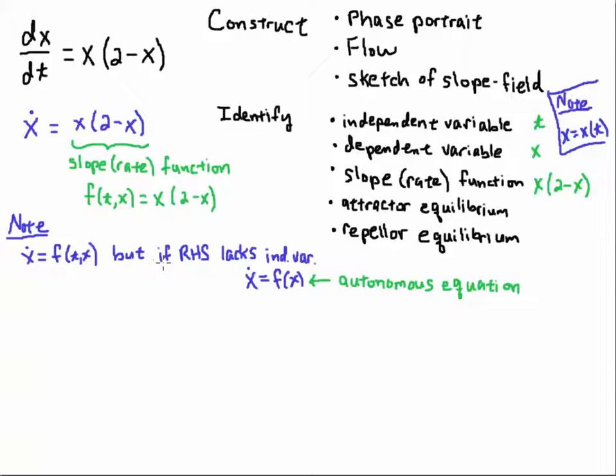But if the right-hand side lacks the independent variable, like it does in this case, it doesn't involve t. Now that does not mean that x is x of t. When we don't write the t, in this case, we would call that suppressing the variable or suppressing the t. Here, t is not being multiplied by x in this case, or there's no function that's just explicitly written as t, like sine of t or cosine of t. It's just x is on the right-hand side. So that's what we mean by it lacks the independent variable.